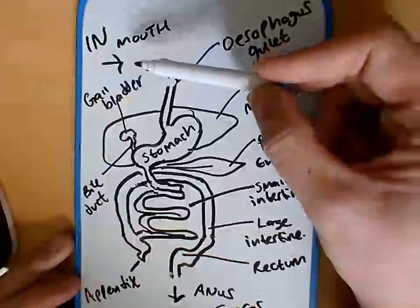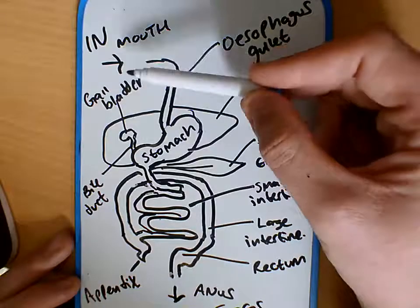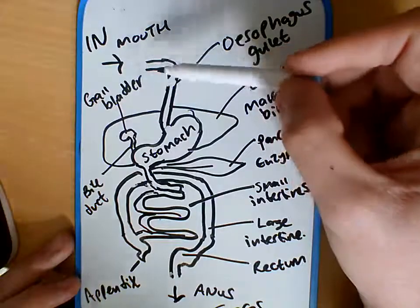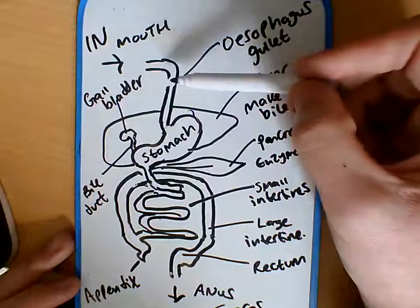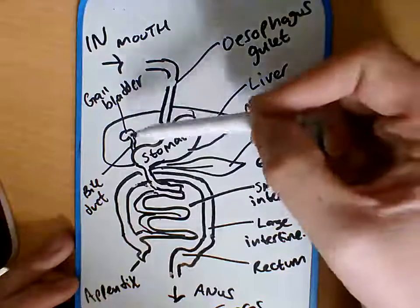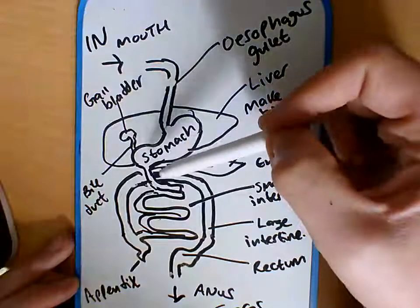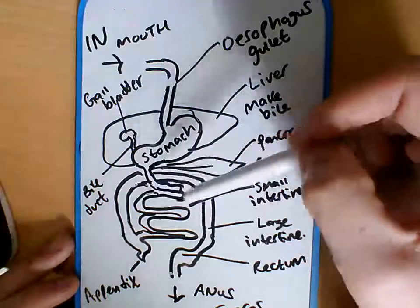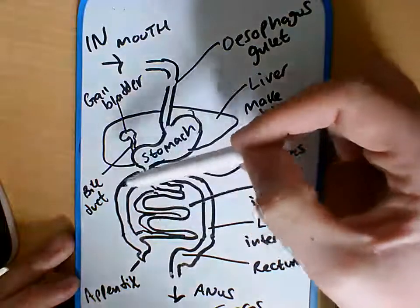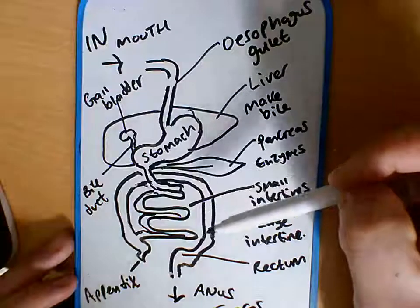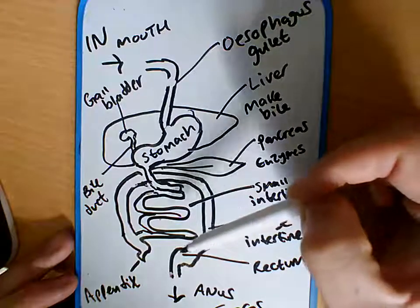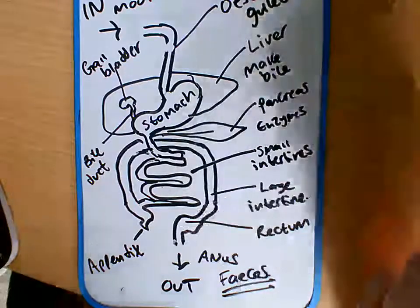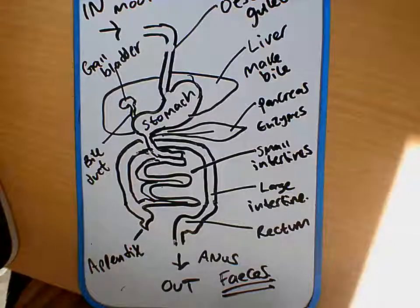So to summarise: food comes into the mouth, we chew it up with the teeth, the tongue moves it around the mouth, and saliva helps to break it down using enzymes and provides lubrication. It moves down the oesophagus into the stomach where it's broken down by the acid and more enzymes. It then comes into the small intestine where bile and enzymes from the pancreas are added, nutrients are absorbed, and the rest is passed into the large intestine where excess water is taken away. Finally, the faeces — the waste — is removed through the anus. So that's just a quick look at the human digestive system.